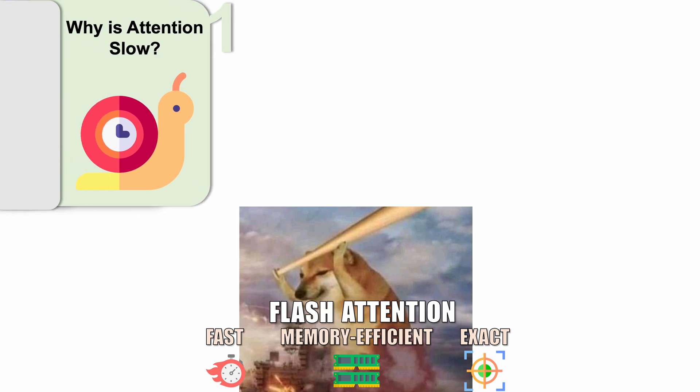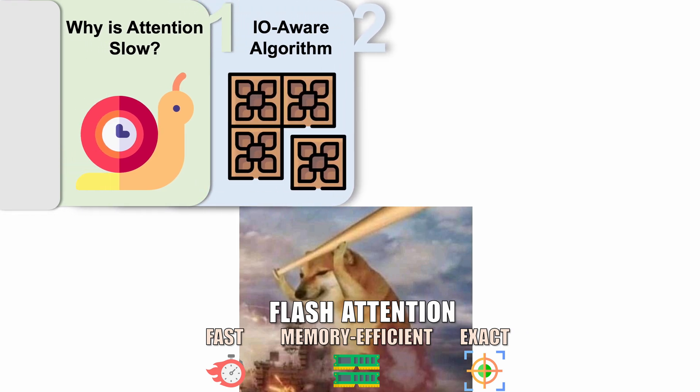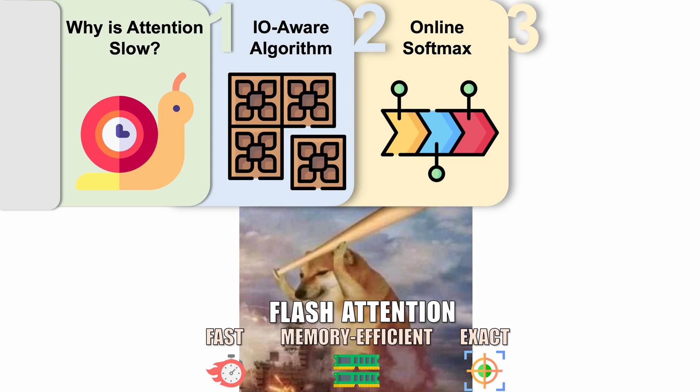In this video, I'll first explain why self-attention is slow and talk about how one could speed up the computation using IO-aware algorithms like tiling. I'll use matrix multiplication as an example. But it's not immediately clear how we can use an IO-aware algorithm to speed up attention. To do this, we need to first understand a clever trick called online softmax. I will then show how extending online softmax leads to flash attention.